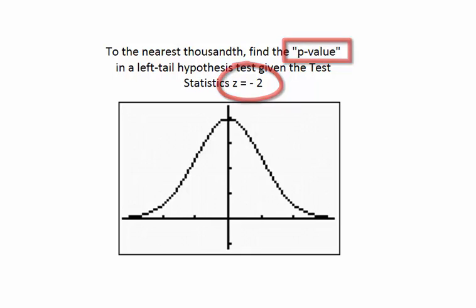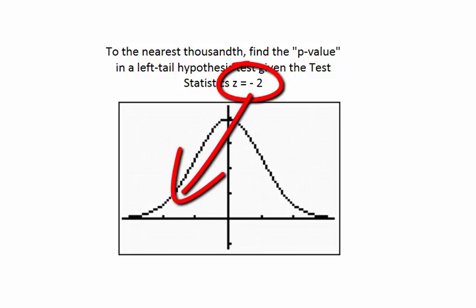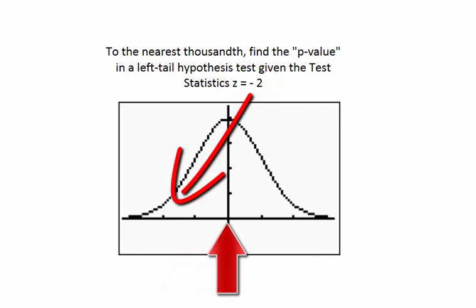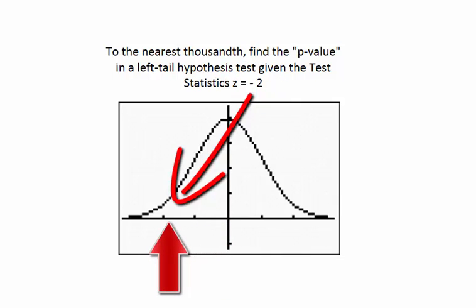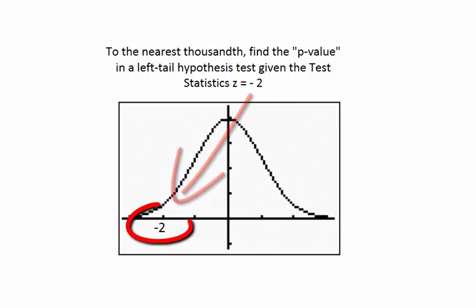The p-value and the test statistic are two values that are very closely related. The test statistic is a point on the x-axis, which is negative 2 to the left of the mean in a normal distribution — in other words, two standard deviations to the left of the mean, which is 0.